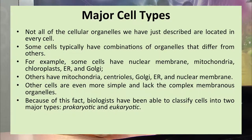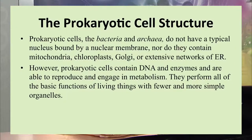On the basis of this complexity, biologists have classified cells into two major types: the prokaryotic cell and the eukaryotic cell. The prokaryotic cell group basically includes bacteria and archaea. These bacteria and archaea do not have a typical nucleus bound by a nuclear membrane, and they do not contain mitochondria, chloroplasts, Golgi, or an extensive network of endoplasmic reticulum.